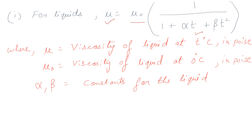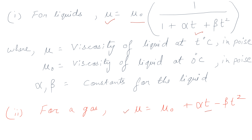For gases the expression is: mu equals mu0 plus alpha-t minus beta-t-squared. Here viscosity is directly proportional to temperature — as temperature increases, gas viscosity increases. mu is the viscosity of the gas at t degrees Celsius, mu0 is viscosity at 0 degrees Celsius, and alpha and beta are constants for gases.